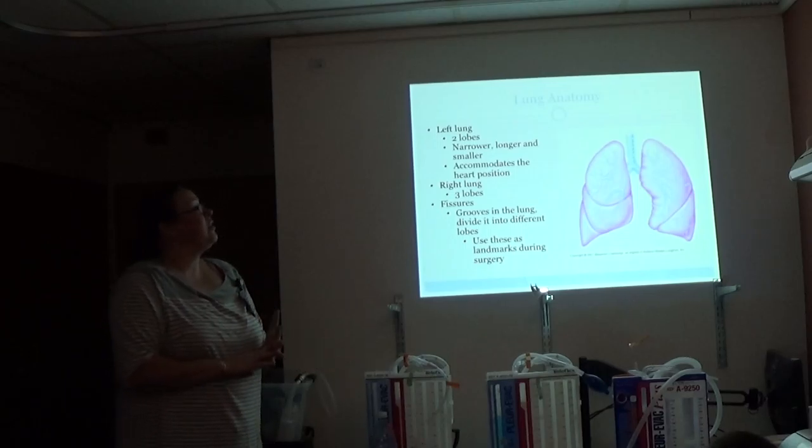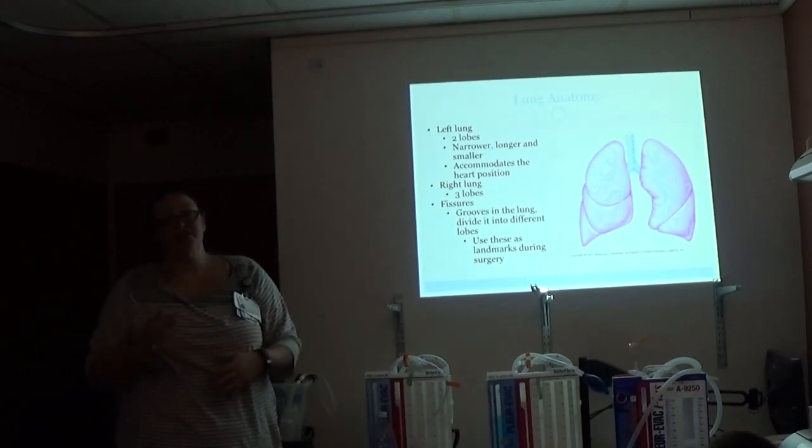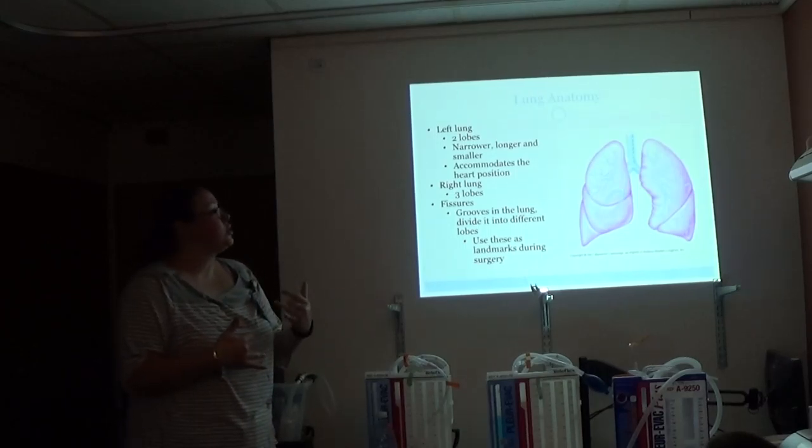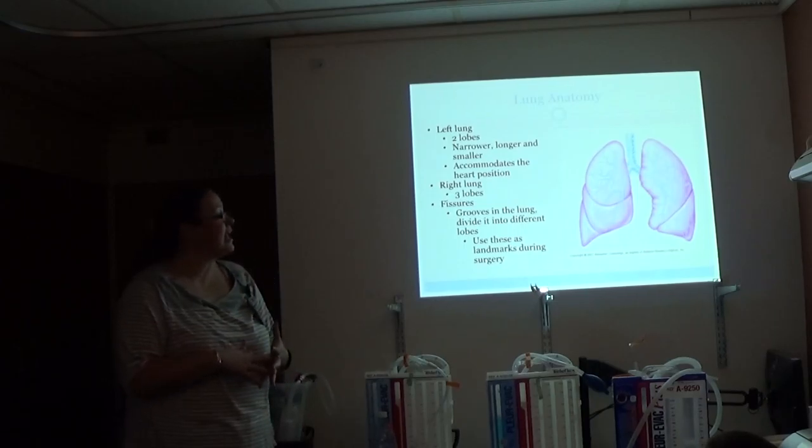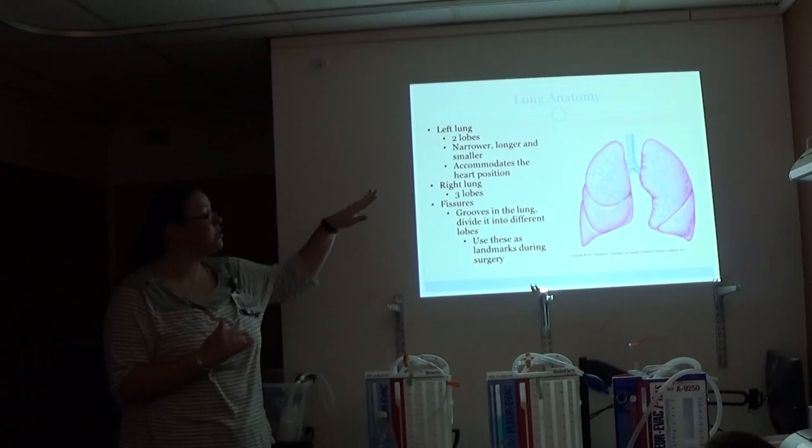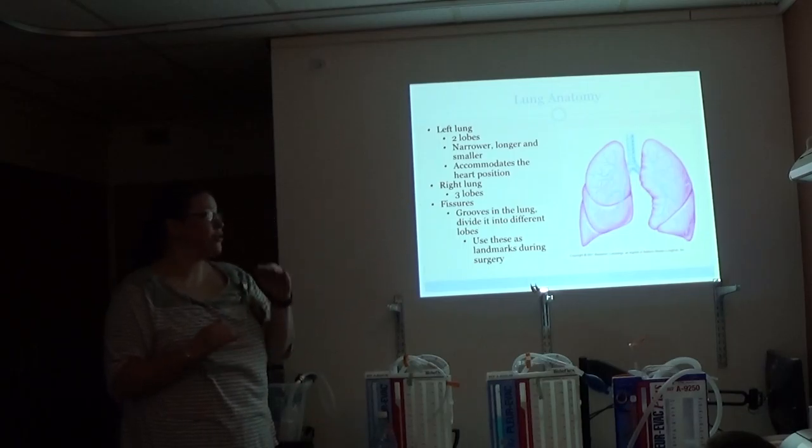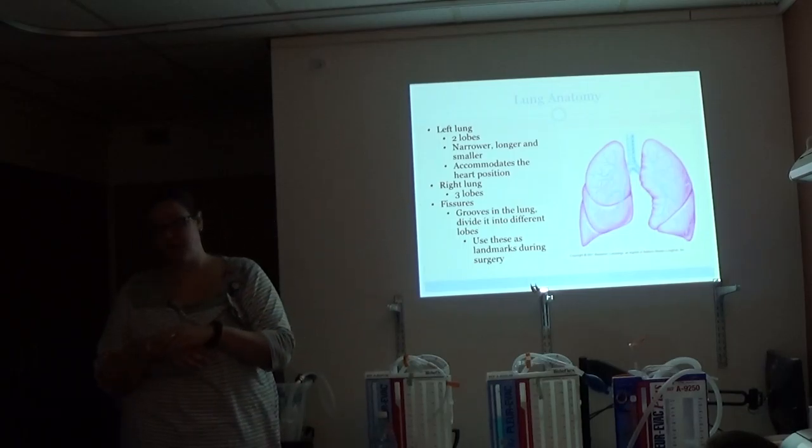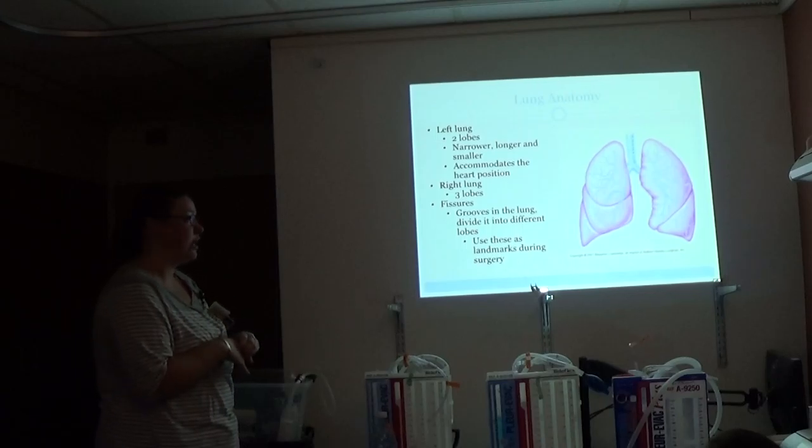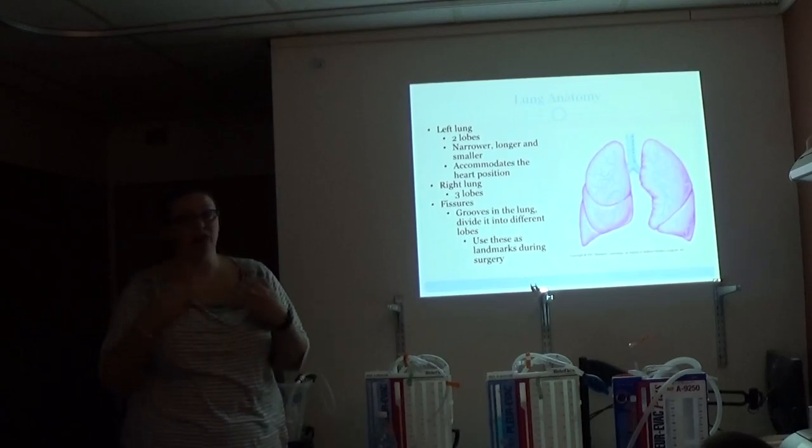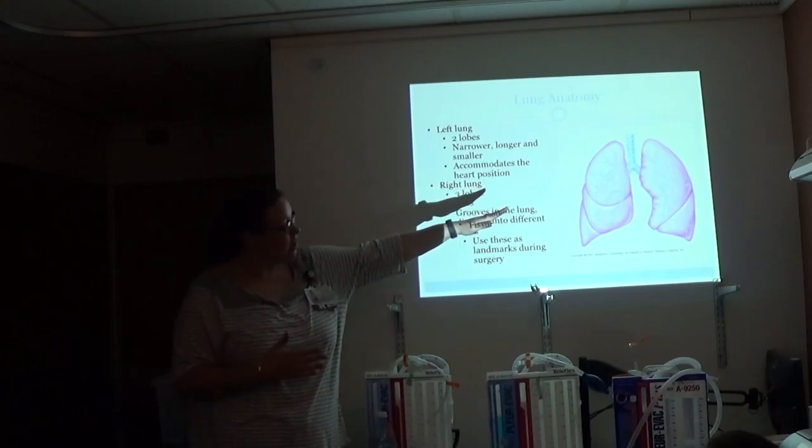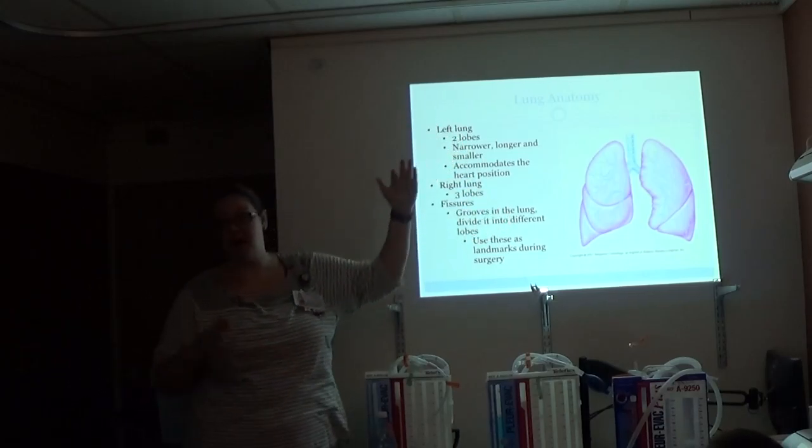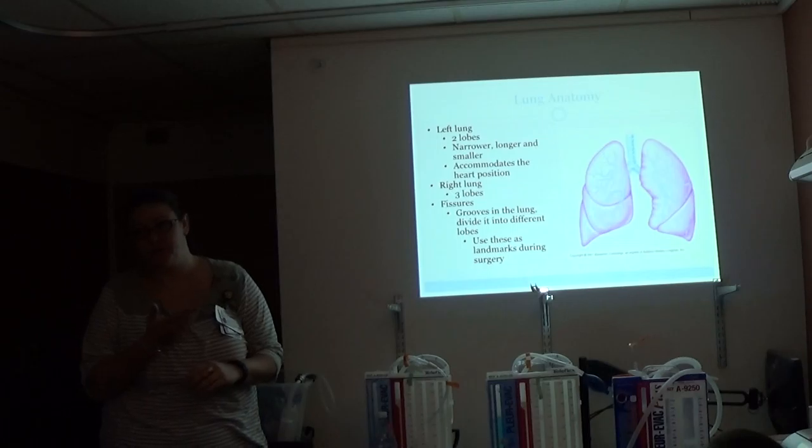So it's important to know your lung anatomy. Your left lung has two lobes, it's narrower, longer, smaller to accommodate your heart. On the right, it has three lobes, and then in between those are the fissures, and those are the grooves in the lung that divide it into different lobes. That's important if you read maybe that your patient has had a right upper lobectomy in their past medical history. It means from that lower fissure there above all of that has been removed.